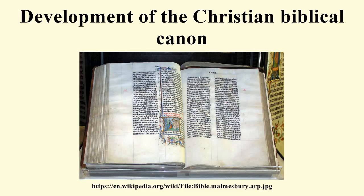The Council of Trent of 1546 reaffirmed that finalization for Roman Catholicism in the wake of the Protestant Reformation. The 39 Articles of 1563 for the Church of England and the Westminster Confession of Faith of 1647 for English Calvinism established the official finalizations for those new branches of Christianity in light of the break with Rome. The Synod of Jerusalem of 1672 made no changes to the New Testament canon for any Orthodox, but resolved some questions about some of the minor Old Testament books for the Greek Orthodox and most other Orthodox jurisdictions.